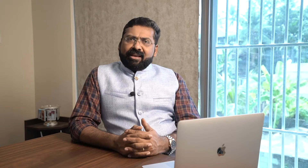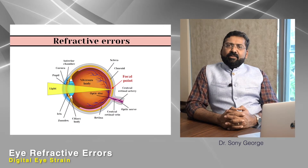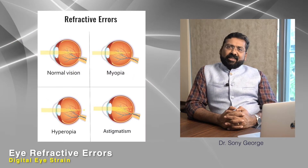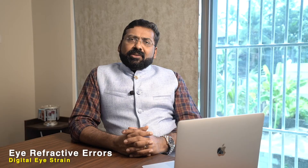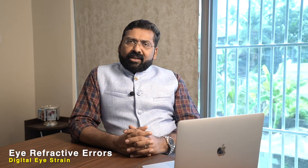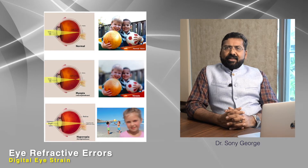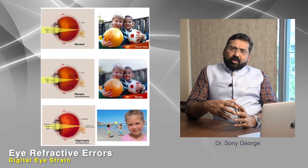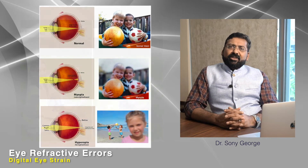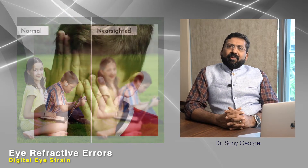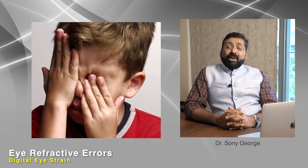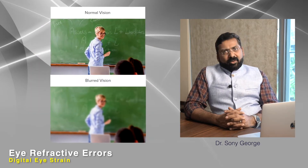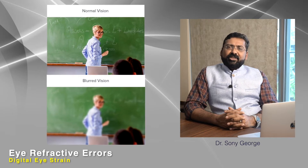If you look at the common problems in children, the most common problem is refractive errors — by which I mean short sight, long sight, and astigmatism, or a mixture of these. When a child has a refractive error, the child is not able to see things as clearly as a child with normal eyes. As a result, the child will go too near to a TV, rub his eyes, have a headache, or his school performance will go down because he's not able to see what the teacher is writing on the board.